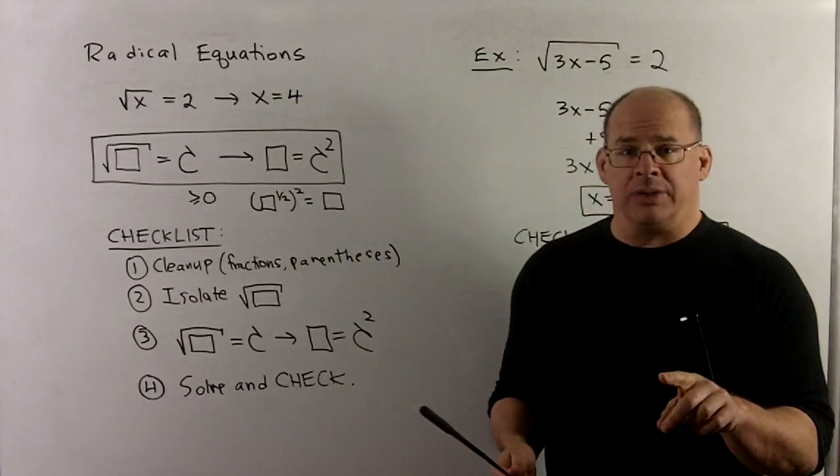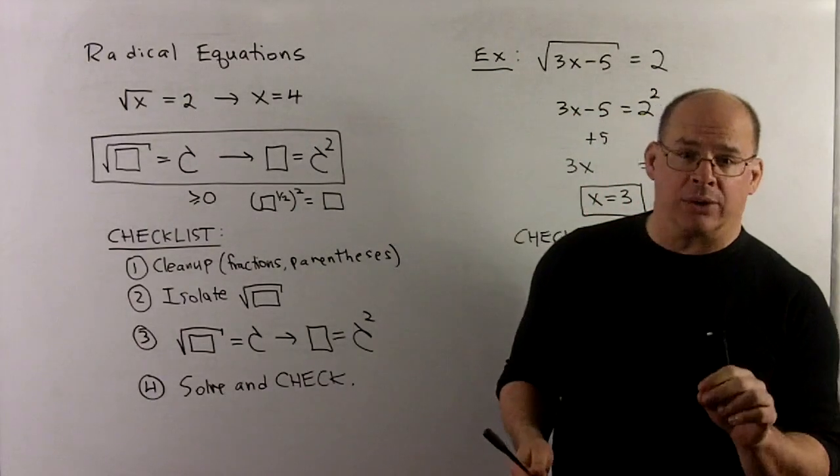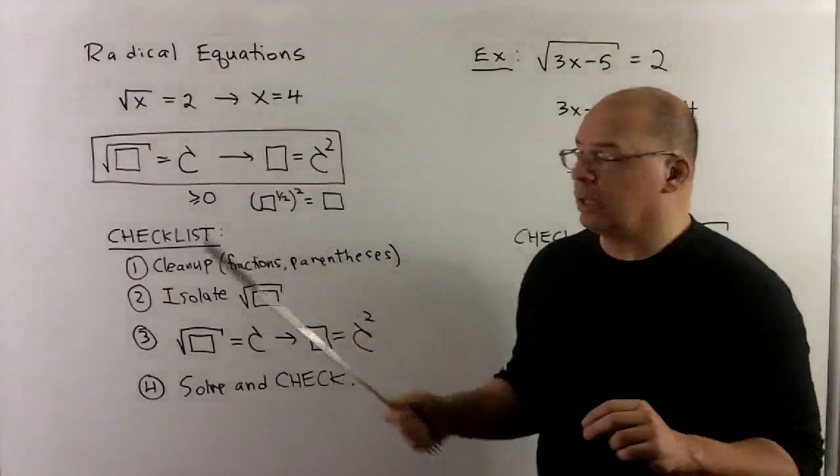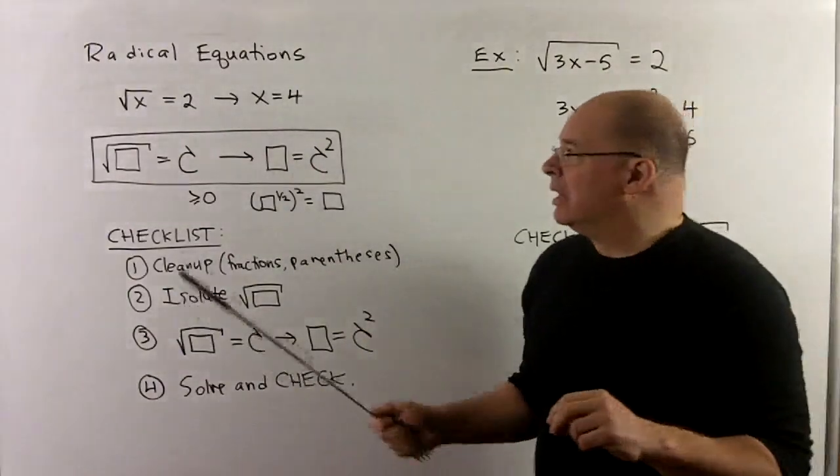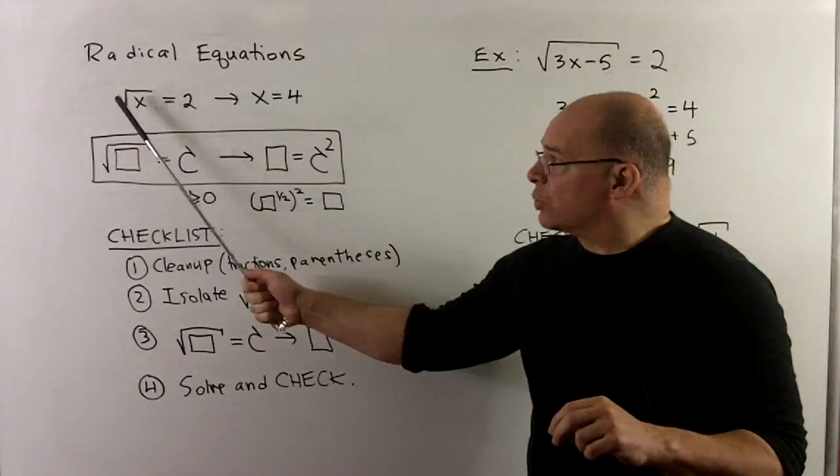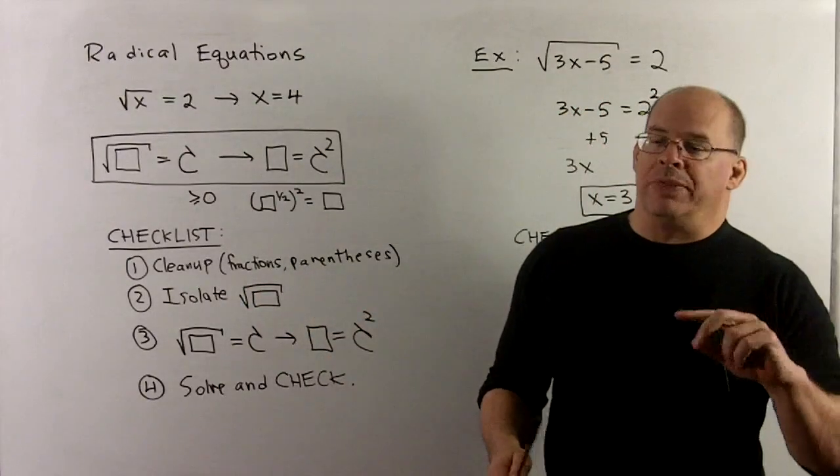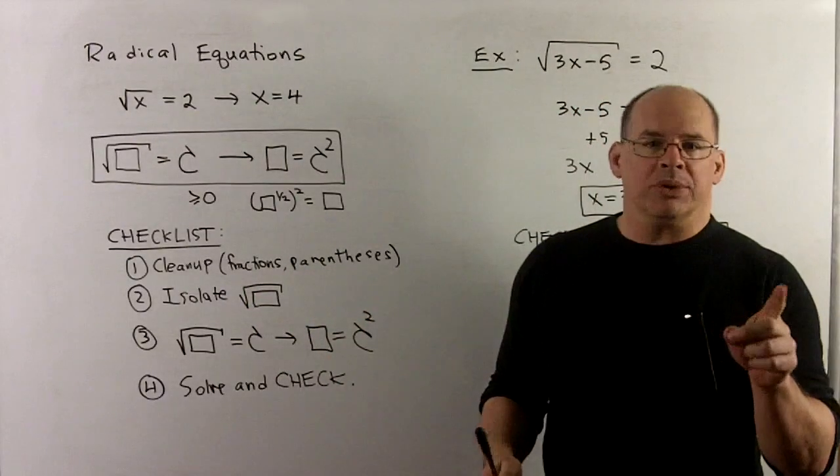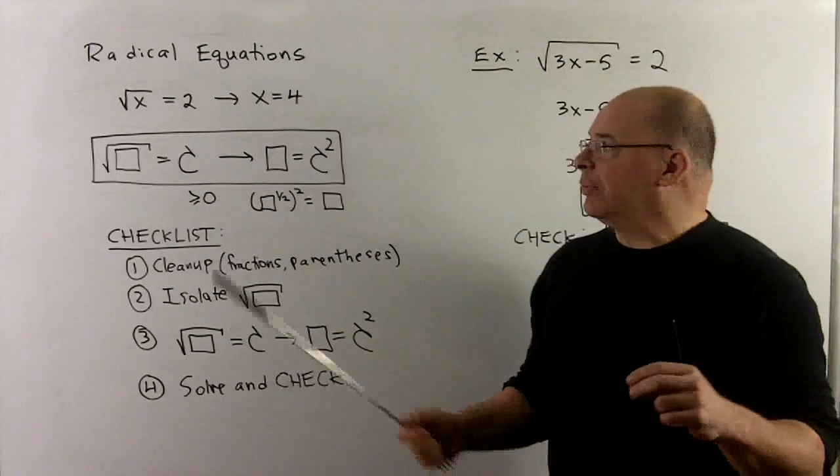We now have all the algebra that we need to work with equations with radicals in them. To start, let's think about the equation square root of x equal to 2. Now, if we think about this, well, what does 2 square up to? That's going to be a 4.